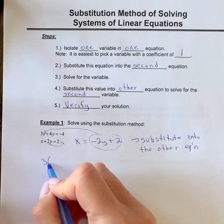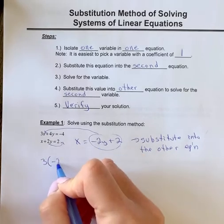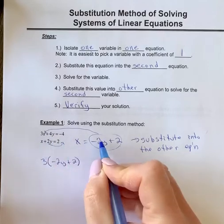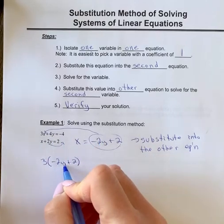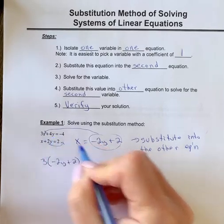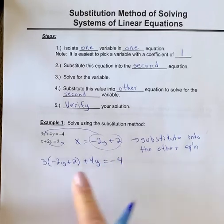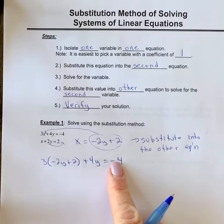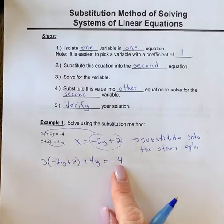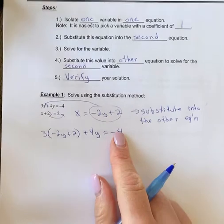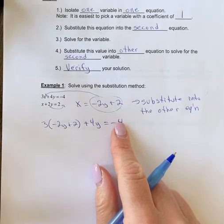It's going to look like this: three times negative 2y plus 2. So instead of writing an x, I substituted negative 2y plus 2. Now plus 4y and equals negative 4 stays there. If you take a look now in your equation, you only have the variable y. As long as you have one variable, you can solve for that variable. That's what we're going to do now.